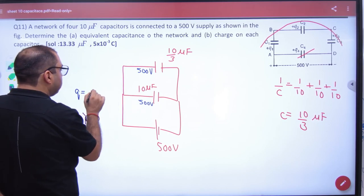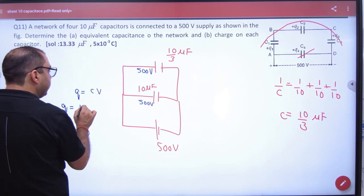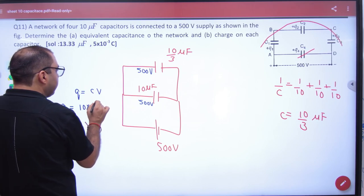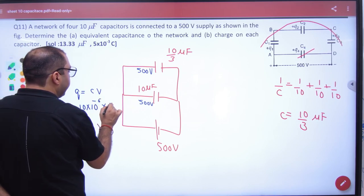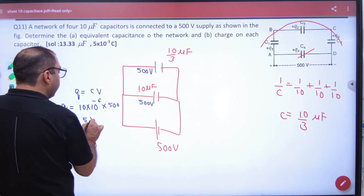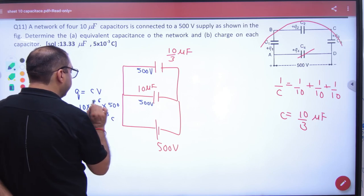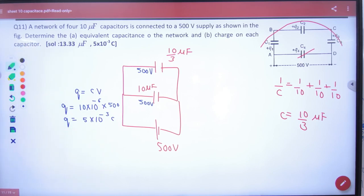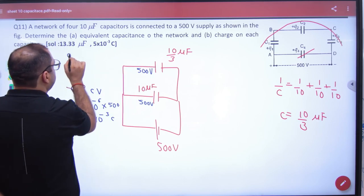So, what is this capacitor's charge? Q is equal to C into V. So, the charge will be 10 into 10 raise to power minus 6 into 500. So, the charge value will be 5 into 10 raise to power minus 3. Q and Q dash.